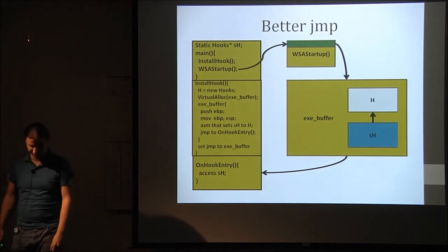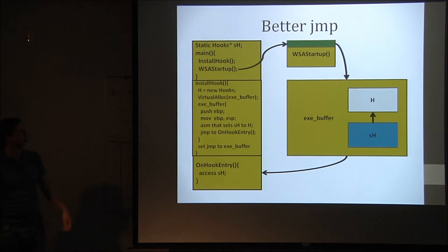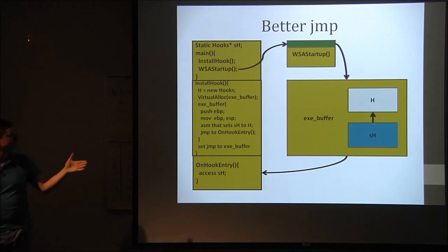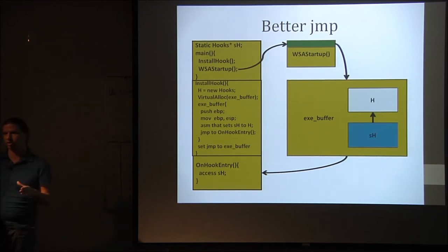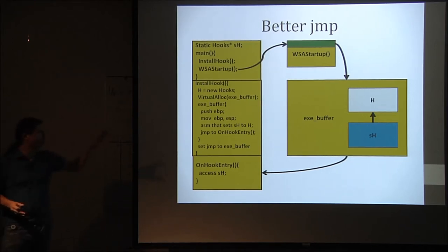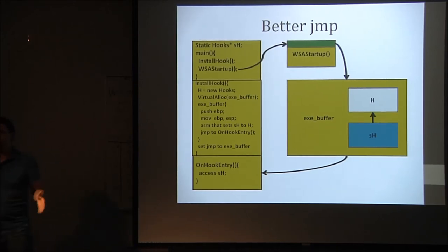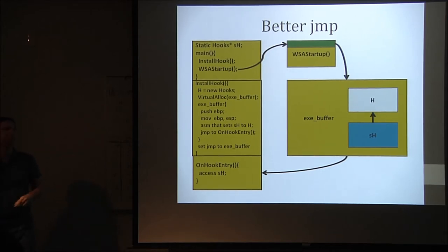This is the better hook process. Main calls install hook — this can be for any particular function, not specifically WSA startup. We call install hook, and it allocates a new hook structure with all the address storage it needs. You would allocate that memory as executable, or use a memory manager. The hook struct itself is heap memory, but you need a new one for every function you hook, because there needs to be a specific one to set up hooking for each function.